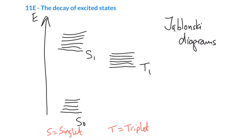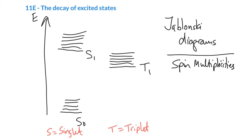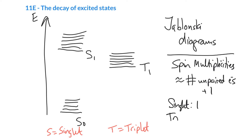What do we mean by singlet or triplet? These are what we refer to technically as the spin multiplicities — similar to multiplicities from NMR in organic chemistry. Very roughly, you can think of the spin multiplicity as the number of unpaired electrons plus 1. So a singlet corresponds to 1, or 0 unpaired electrons, and a triplet corresponds to 3, or 2 unpaired electrons.